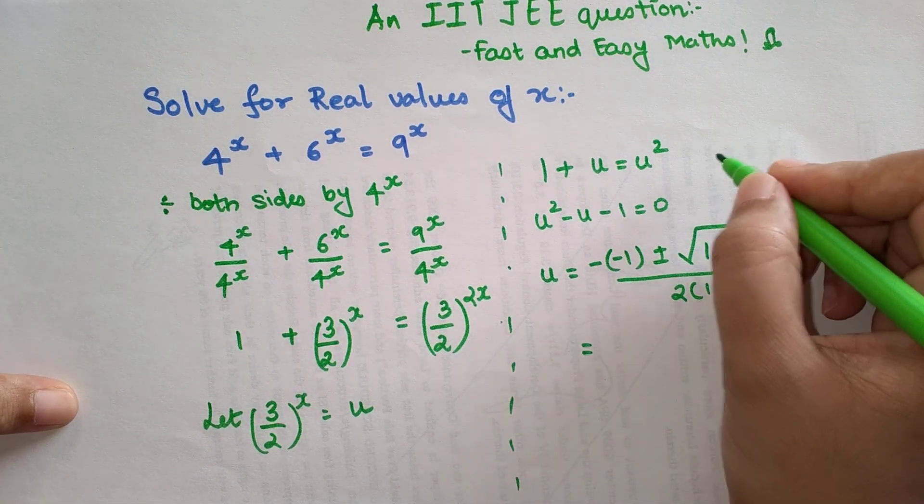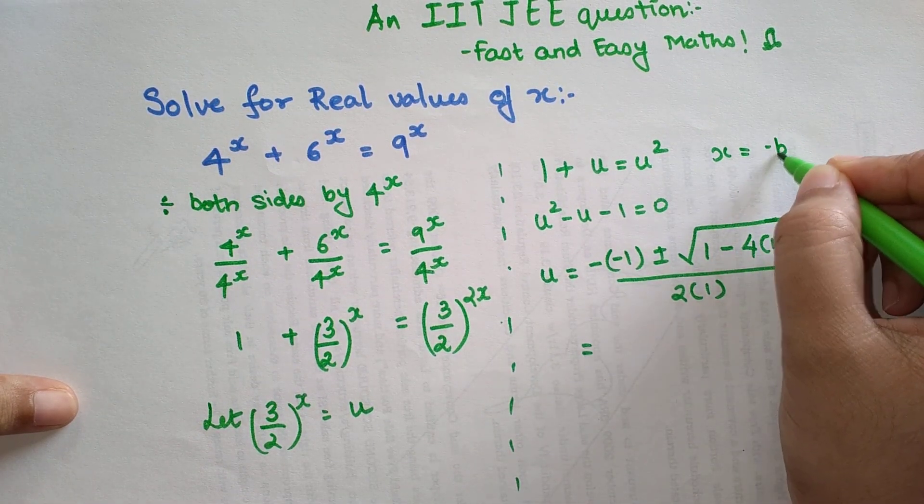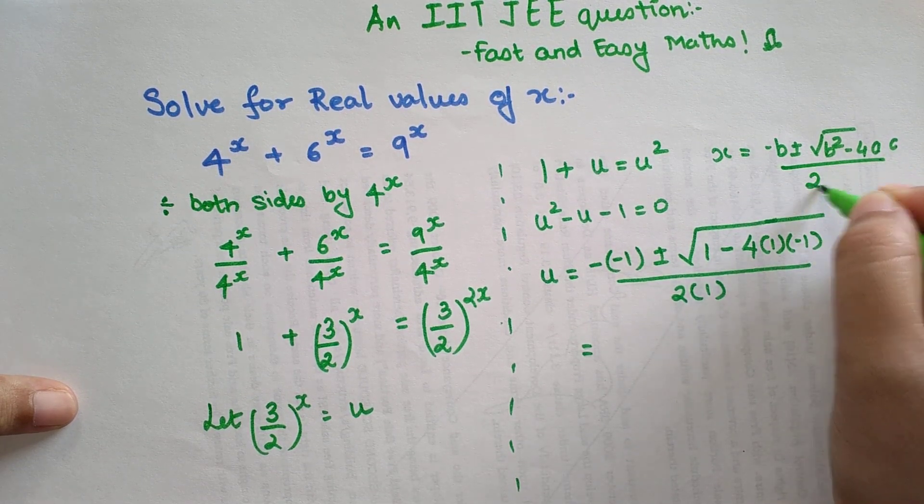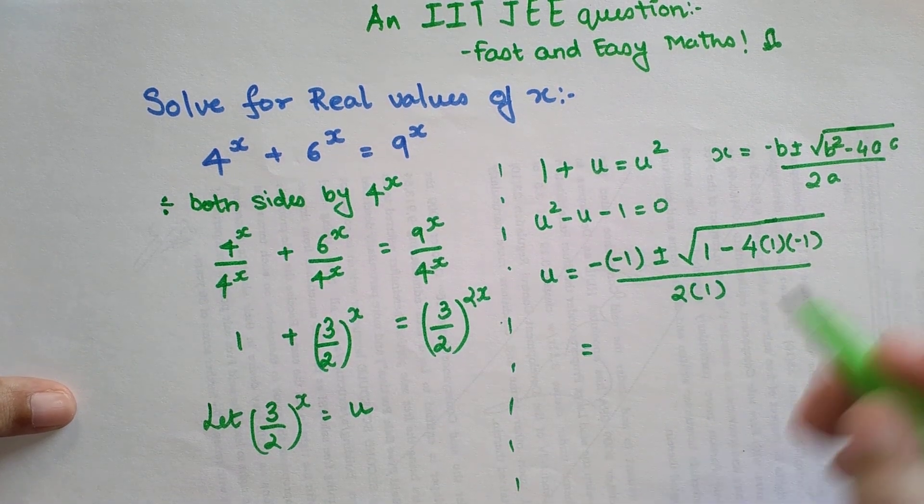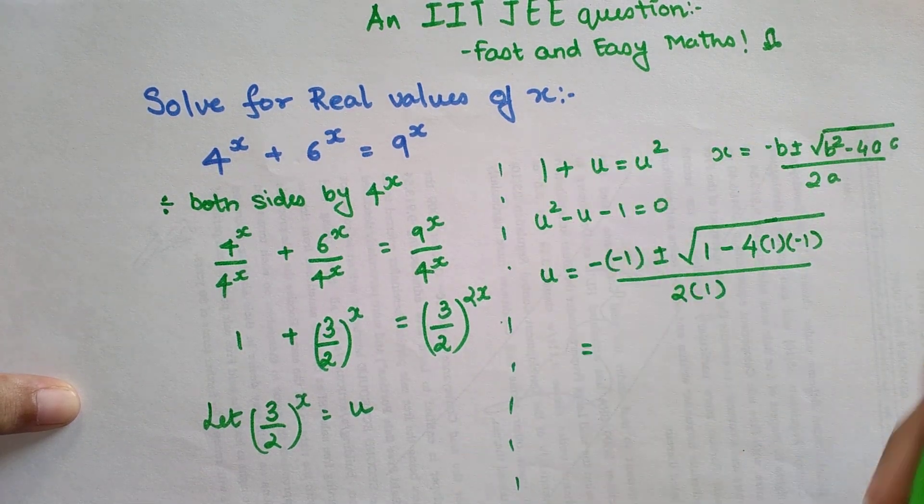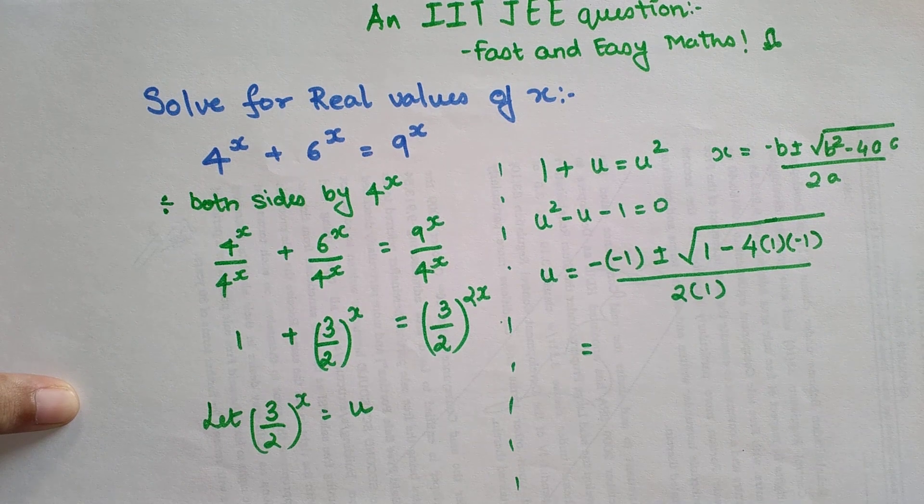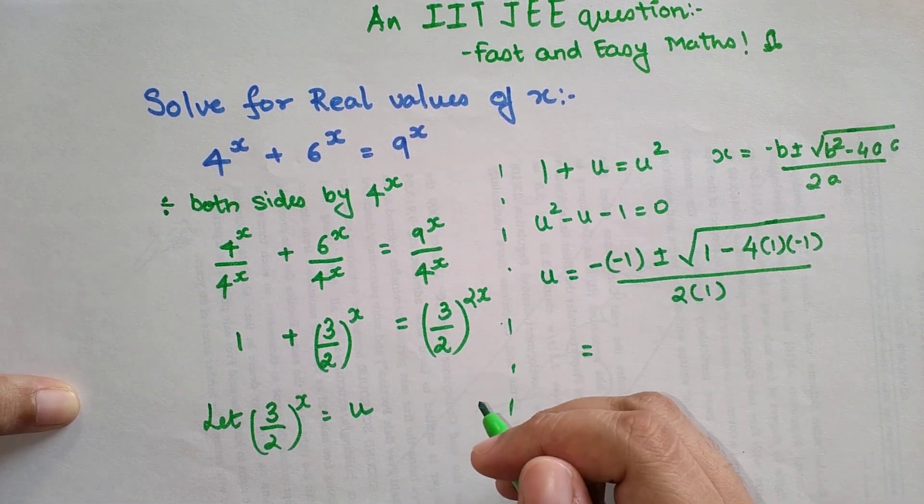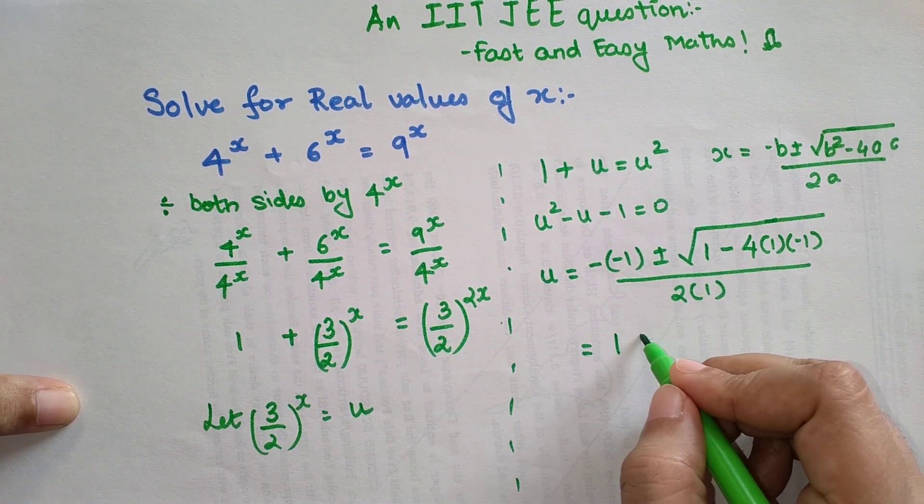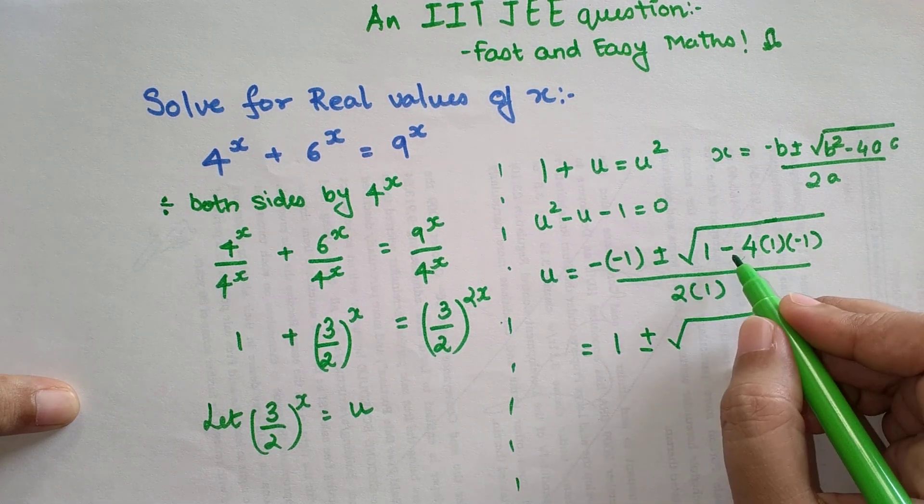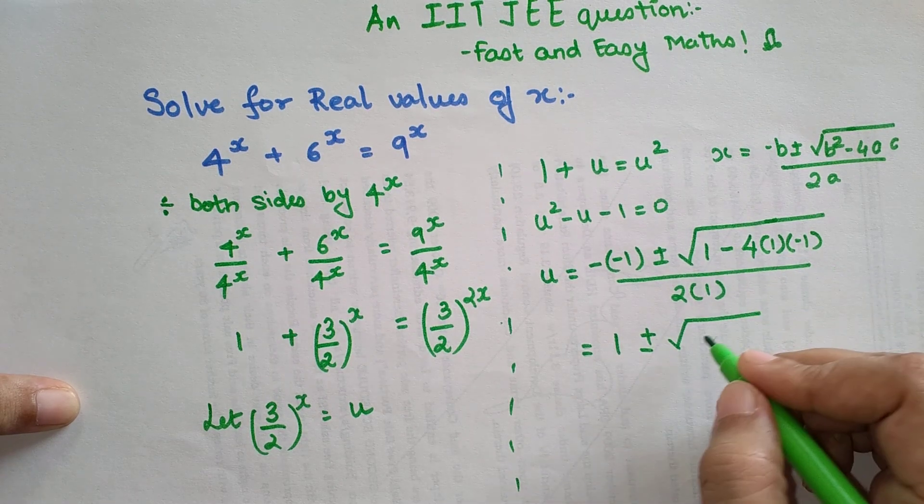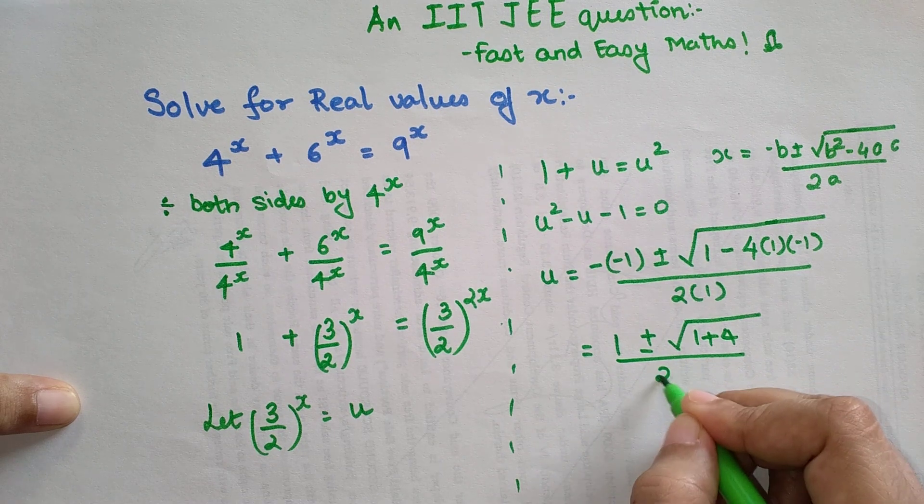The formula is: minus b plus minus root of b squared minus 4ac upon 2a. I also have a quadratic equation series, so if you want to know how exactly this formula comes into play, I'll put up a link on top as well as in the description. So now when you solve this further, minus of minus 1 gets you plus 1 plus minus root of 1 minus 4 into 1 is 4 into minus 1 gets you plus 4, so 1 plus 4 upon 2.